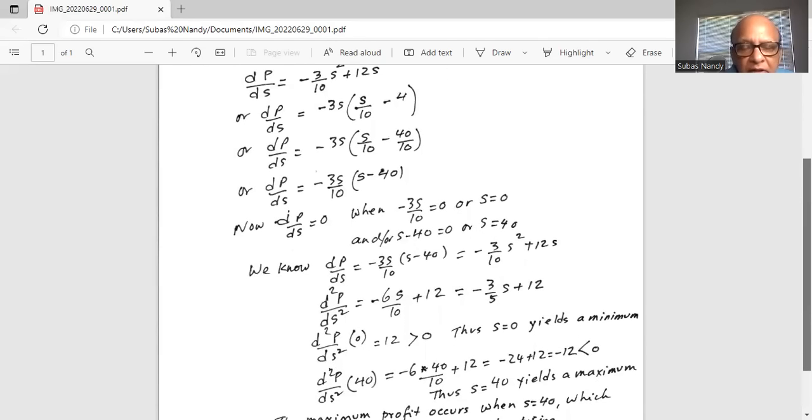Now the second derivative of p with respect to s when s is equal to 0 is 12. So 12 is greater than 0, thus s equal to 0 is a minimum.